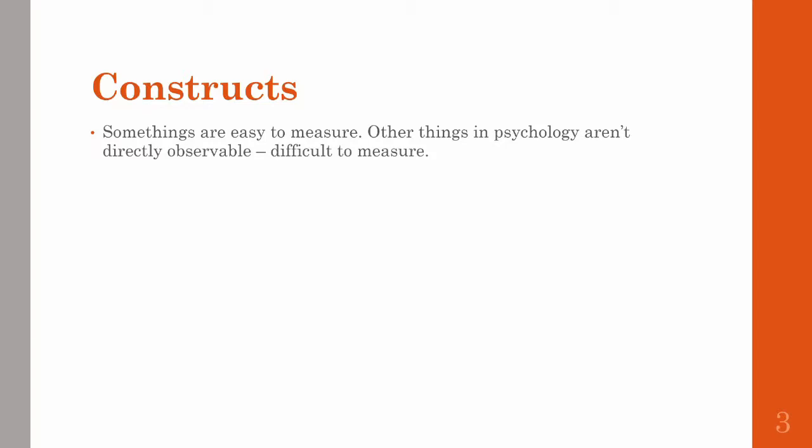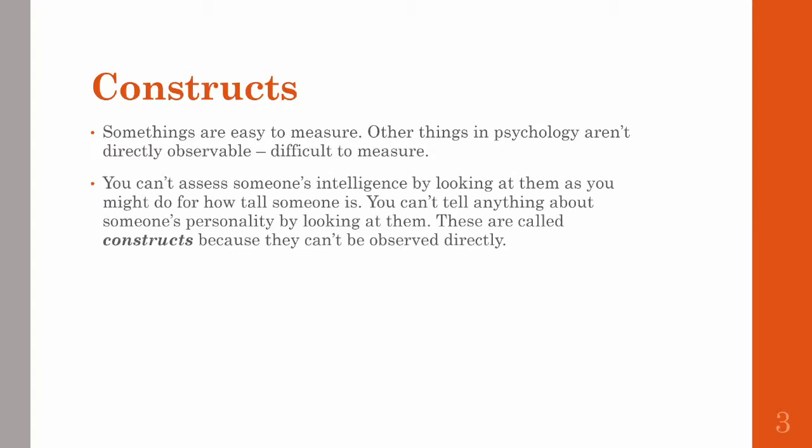Other things in psychology are not so easy to measure because you can't directly observe them. You can't measure someone's intelligence just by looking at them. Likewise, you can't tell much about a person's personality just by looking at them also. These characteristics that cannot be observed directly are called constructs. With a given construct, psychologists have to find ways to measure them appropriately. Sometimes it can be just with one test, but oftentimes it's made up of a lot of different parts.